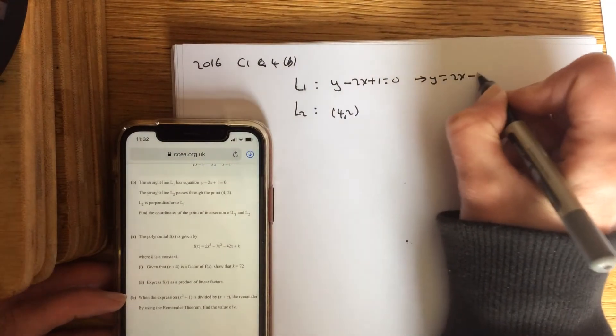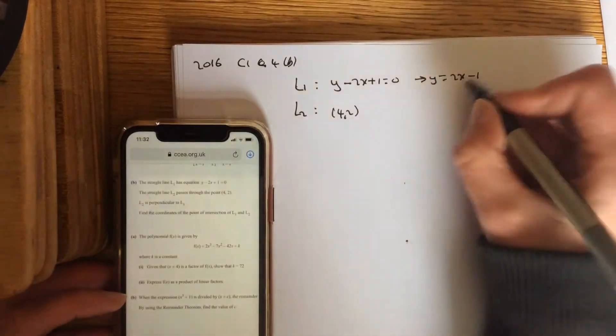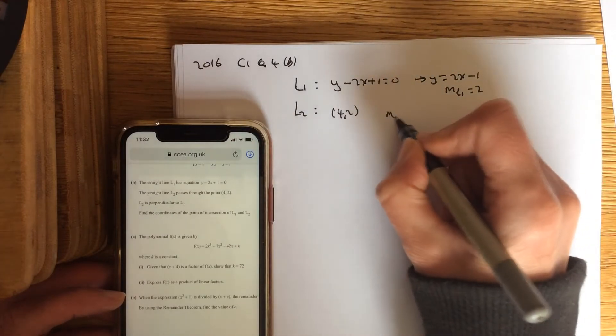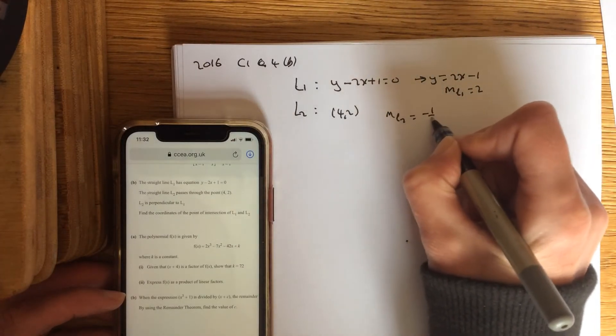So let me work out the gradient of L1, just bringing it on to one side. So the gradient of L1 is 2, so that means the gradient of L2 is minus 1 over that.